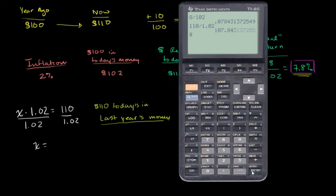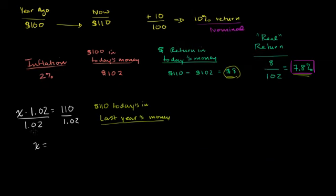So this would be equal to $107.8, just roughly, just to round it. So this is equal to $107.8. So $110 today buys us the exact same thing, if you believe the whole CPI index,